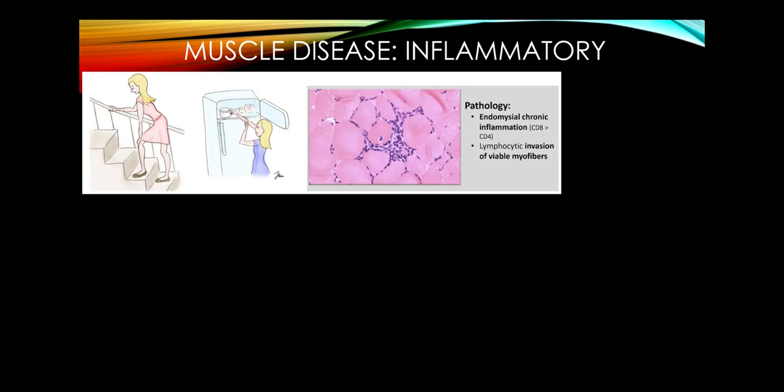In terms of inflammatory myopathies, a key feature of any muscle disease is proximal weakness more than distal weakness — there are some exceptions, but that's the rule. Proximal weakness results in difficulty walking upstairs, holding your arms above your head, and we confirm that on the neurologic examination.